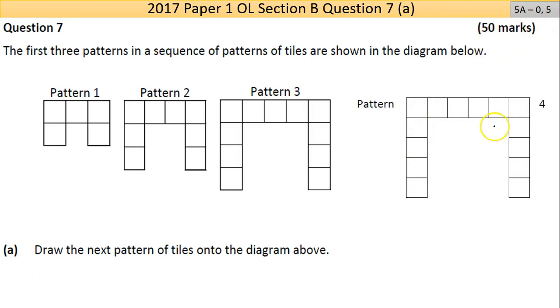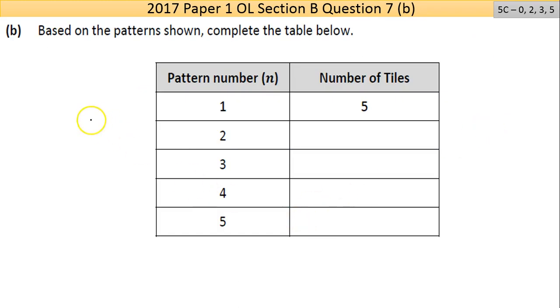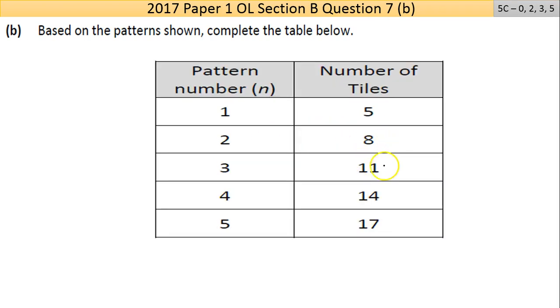Part B here is five C's - low partial, high partial. You have your table of the pattern that's going on. In pattern number one there's five tiles. You should see from pattern number two that the answer is eight, then eleven, then fourteen, and the next one will be seventeen. The difference each time is three.